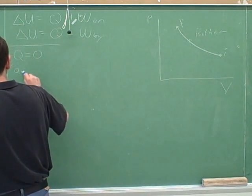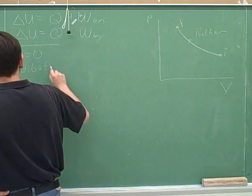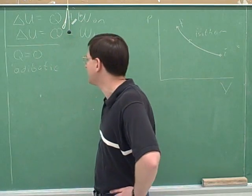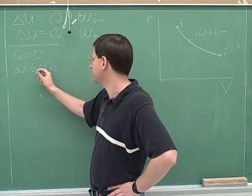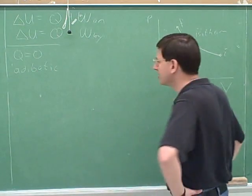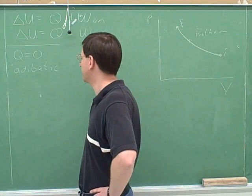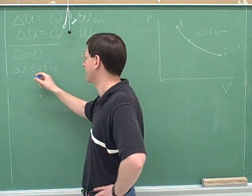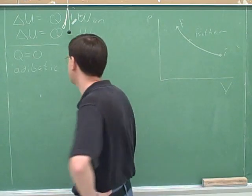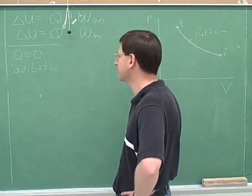The way to pronounce that is adiabatic, with an emphasis on the bat. Adiabatic. I've been trying to explain where all these words came from, but I don't know where this came from, so we'll just memorize it. Adiabatic means zero heat exchange, by definition.